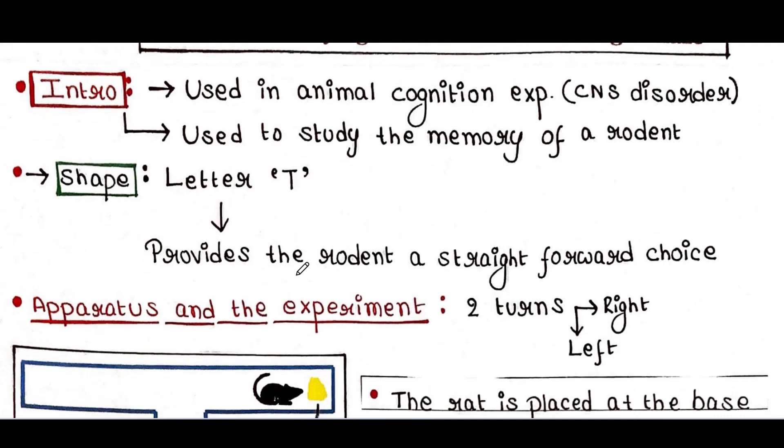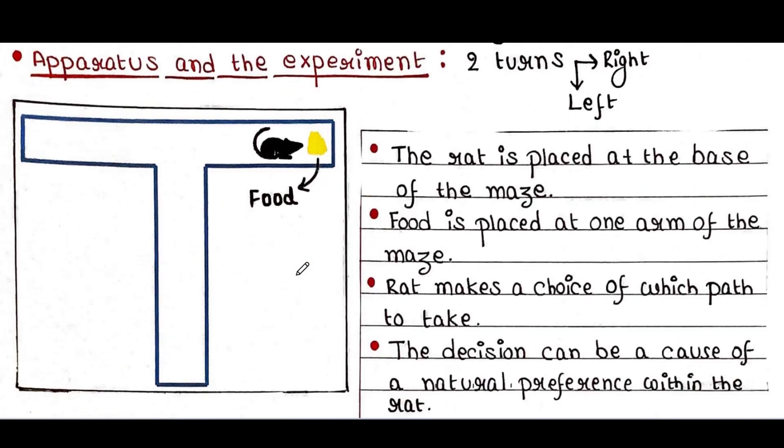Let's see the apparatus and talk about the specific experiment. This T-maze contains two turns: right and left. The rat is first placed at the base of the maze.